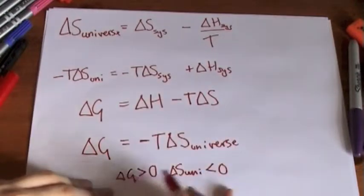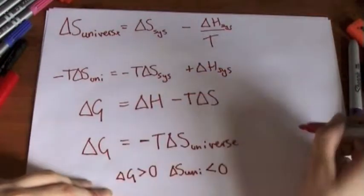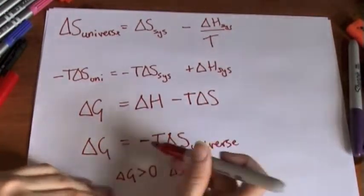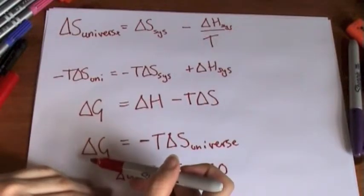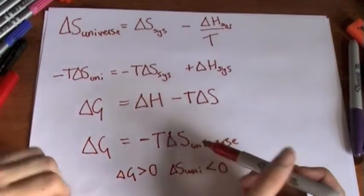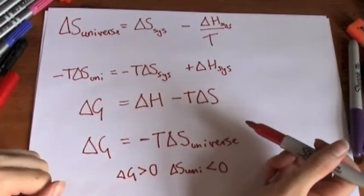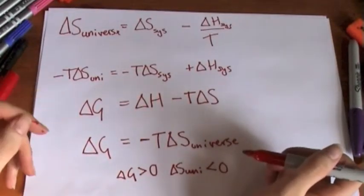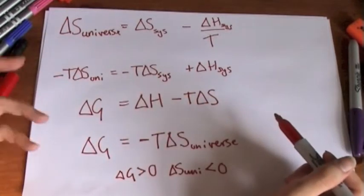So if delta G is less than zero, as in delta G is minus, then this must be positive. And that's why delta G is less than zero. For a reaction to be spontaneous, I just think it's nice to see where it comes from because it makes more sense.